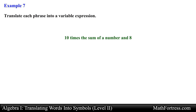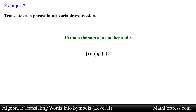Let's try the next example: '10 times the sum of a number and 8.' Here we have multiplication because of the word 'times,' and addition because of the word 'sum.' The product involves the number 10 and the sum of a number and 8, so we need grouping symbols. The phrase translates to 10 times the quantity (n plus 8). One number is 10 and the other is the sum of a number and 8, so we group that expression before multiplying by 10.